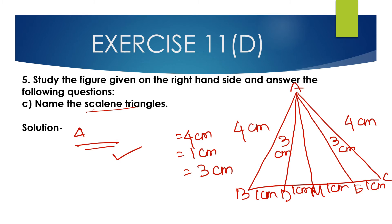In triangle AEC, AC is 4cm, AE is 3cm, and EC is 1cm. All three sides are different, so triangle AEC is also a scalene triangle. Therefore, triangle ABD and triangle AEC are both scalene triangles.